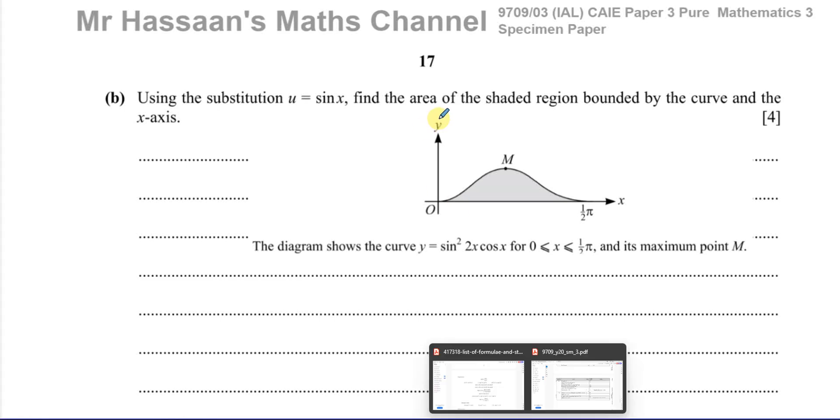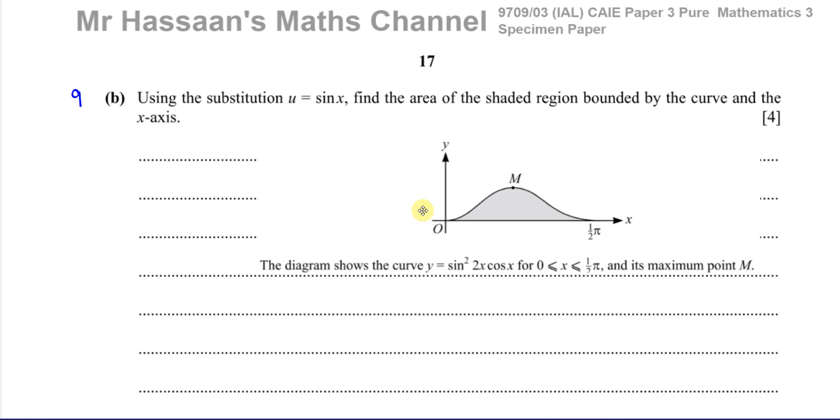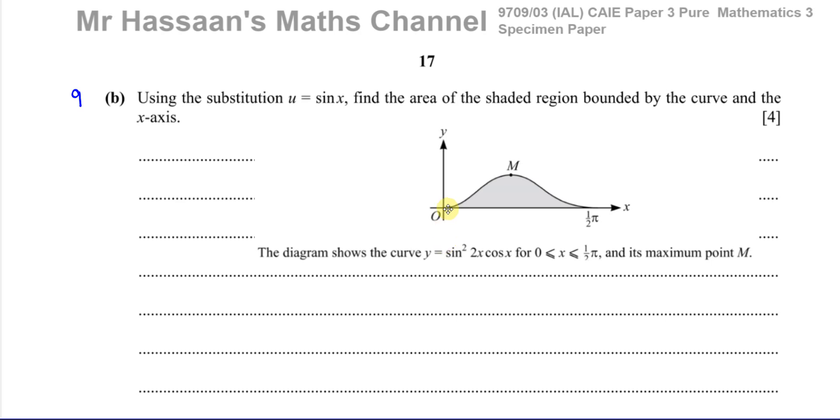Welcome back. This is Mr. Hassan's Maths Channel. I'm now going to be answering question number 9, part B. This is from the specimen paper of the 9709, paper 3, pure mathematics paper from the International A-Level Cambridge exam. We have this diagram which was given to us in part A, which we need for part B as well, so I've copied it over here.